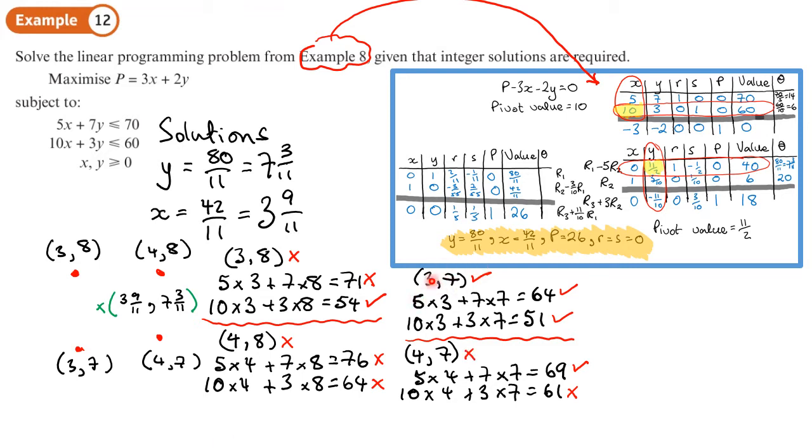So the only one actually to try is (3, 7). So our maximum integer profit is going to be when x is 3 and y is 7. That will be P equals 3 times 3 plus 2 times 7, which is 9 plus 14, giving us a value of 23.